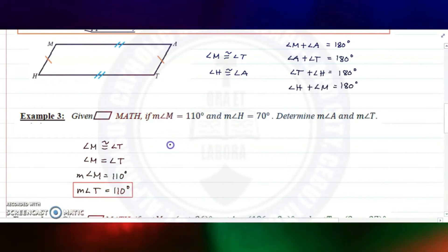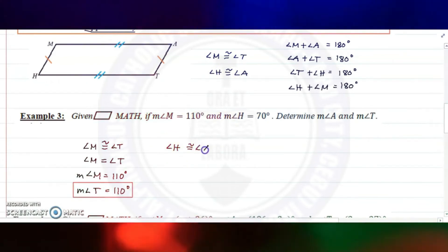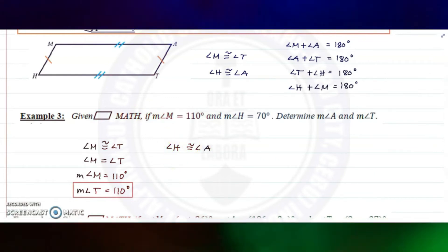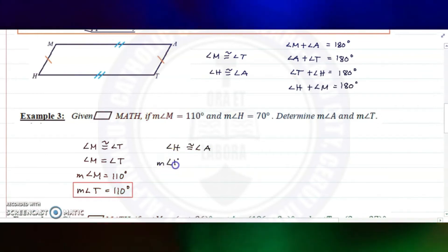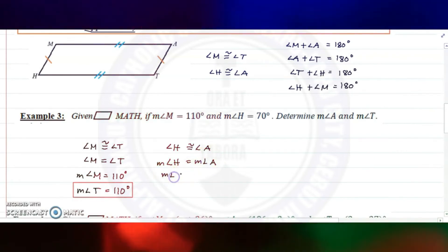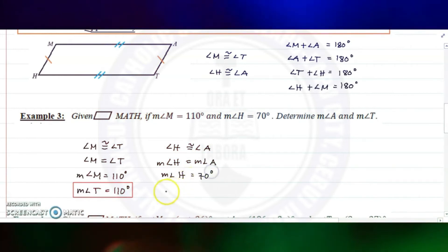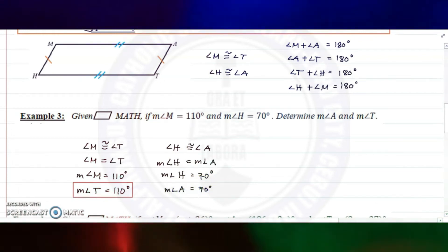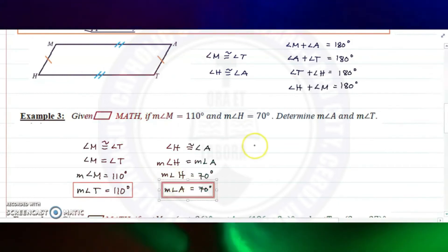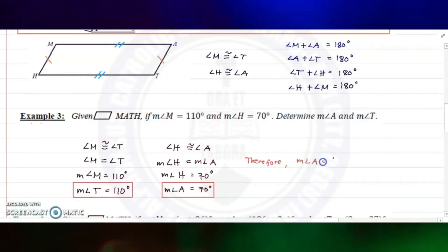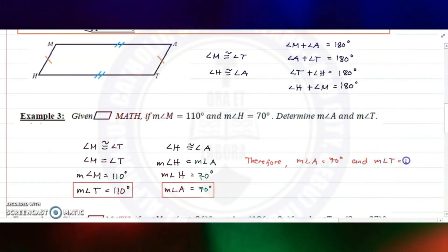Since angle H is congruent to angle A because they are opposite angles, and if they are congruent they are equal, the measure of angle H is 70 degrees, therefore the measure of angle A is also 70 degrees. Therefore, the measure of angle A is 70 degrees and the measure of angle T is 110 degrees.